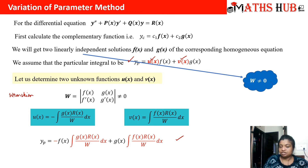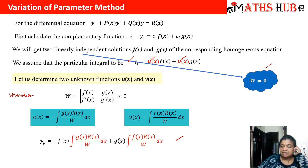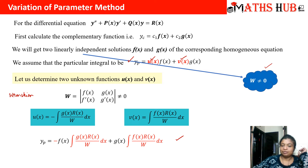This is the variation of parameters method. Now what are its limitations? First, this method is only applicable to a second-order differential equation. Second, since we divide by the Wronskian in the integration, if the Wronskian becomes zero, we cannot apply it — we cannot divide by zero. So the mandatory condition is that the Wronskian must not equal zero, which also means f(x) and g(x) are two linearly independent solutions.